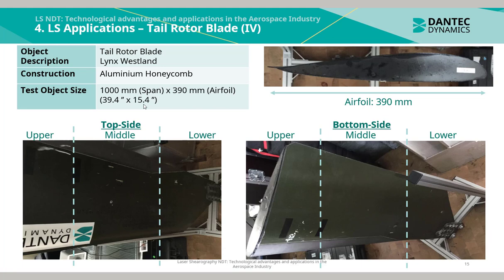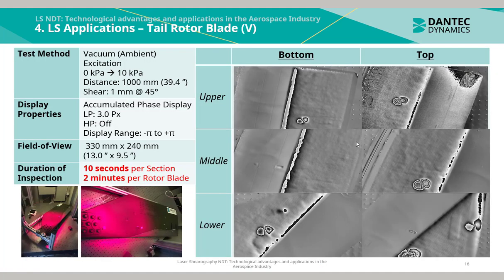A Laser Shearography application on a tail rotor blade taken from a helicopter shows a test object approximately 1000mm in span by 390mm in the airflow direction. Three inspections were performed on both sides of the rotor blade using vacuum ambient excitation from 0 kPa to 10 kPa, taking approximately 10 seconds per section, generating six different phase maps. The entire inspection took approximately 2 minutes per rotor blade, and various defects are visually identifiable in the phase maps.